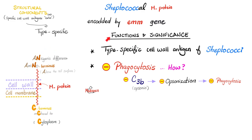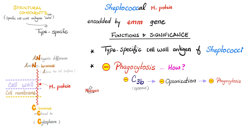The M-protein is a type-specific cell wall antigen of streptococcus — this is for the lab test and how you tell the difference between different types of streptococci. The function for the bacteria: it inhibits phagocytosis by inhibiting your C3b, the complement protein responsible for opsonization. No opsonization, no phagocytosis.